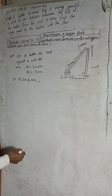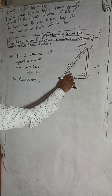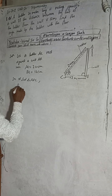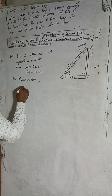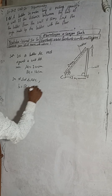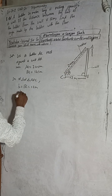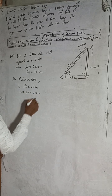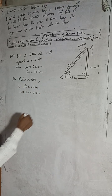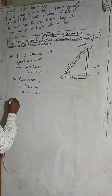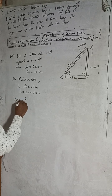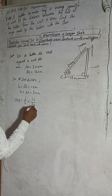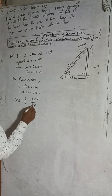In this triangle, theta is the angle at C. The perpendicular is AB, and the base is BC. The base BC is equal to 12 metres, and the hypotenuse AC is equal to 24 metres. Therefore, cos theta equals base over hypotenuse, which is 12 over 24.